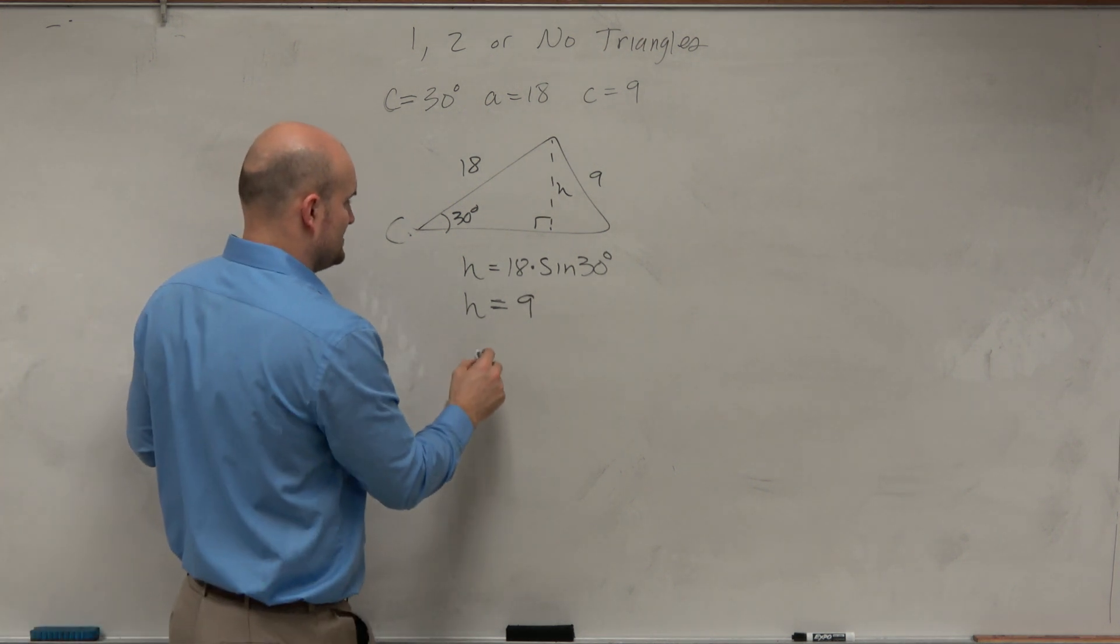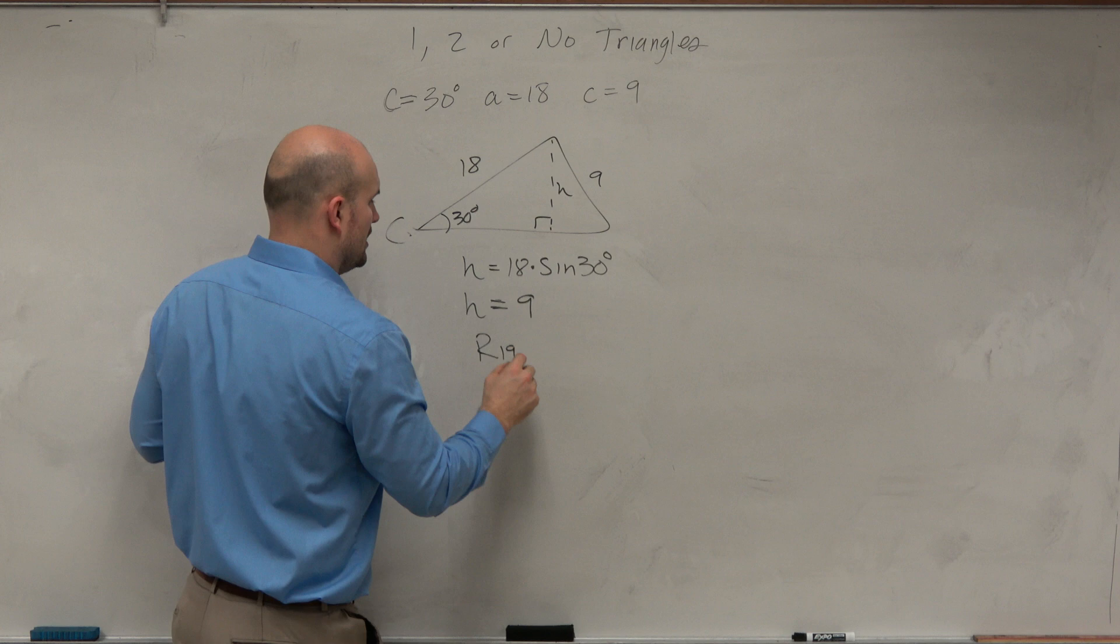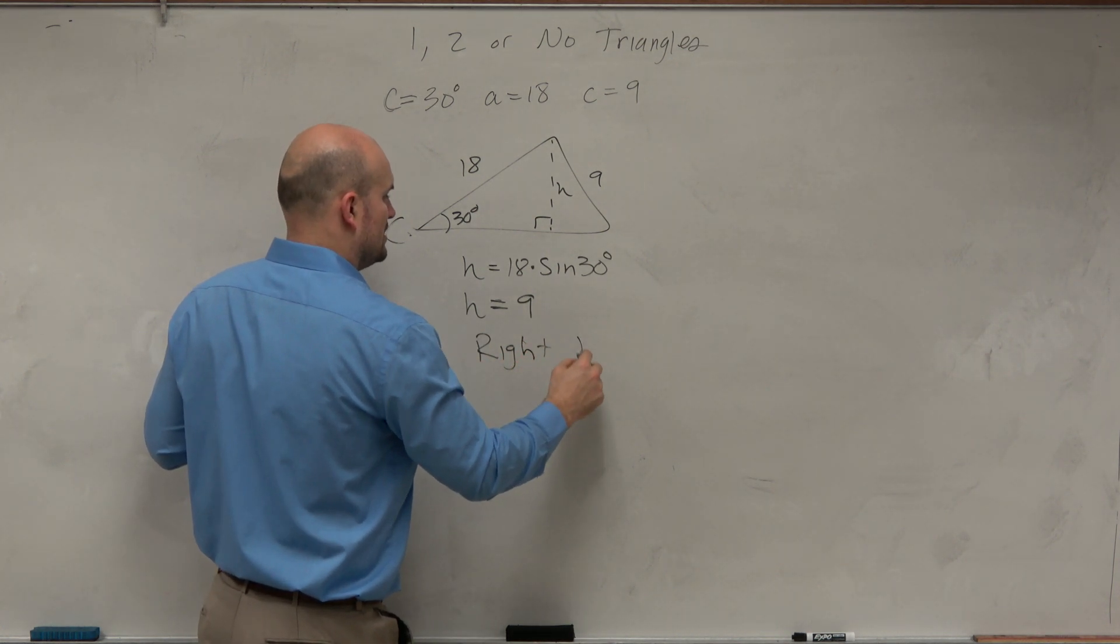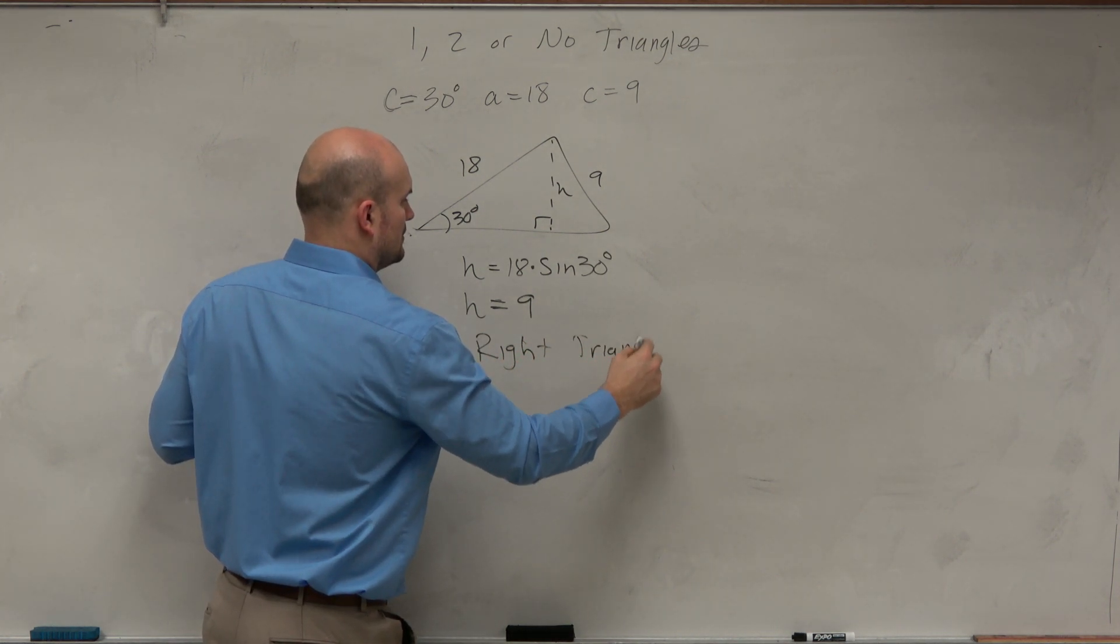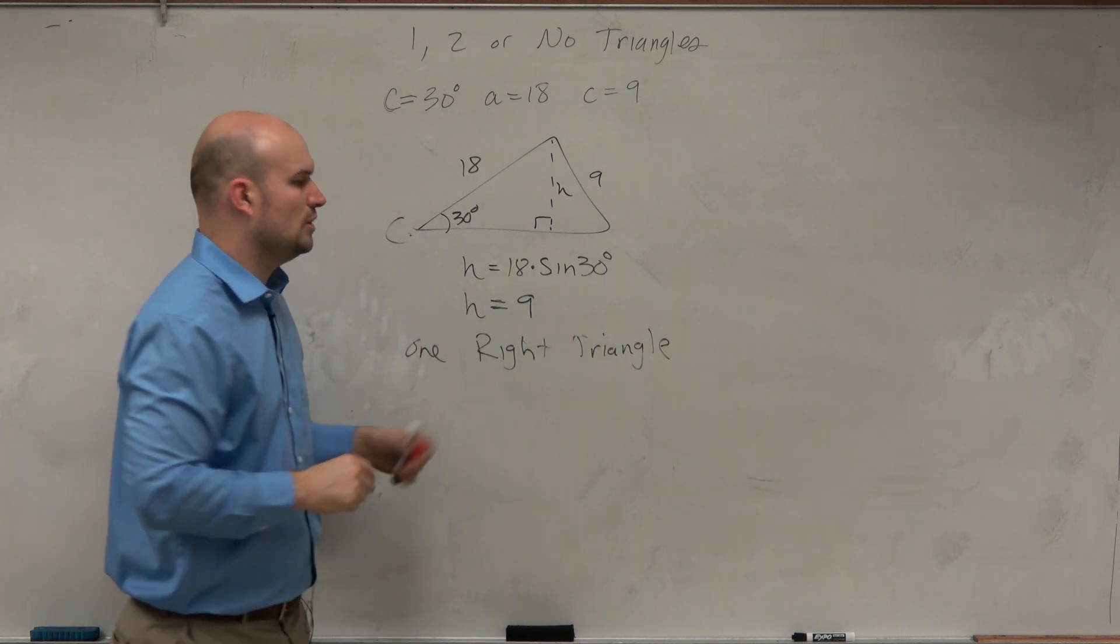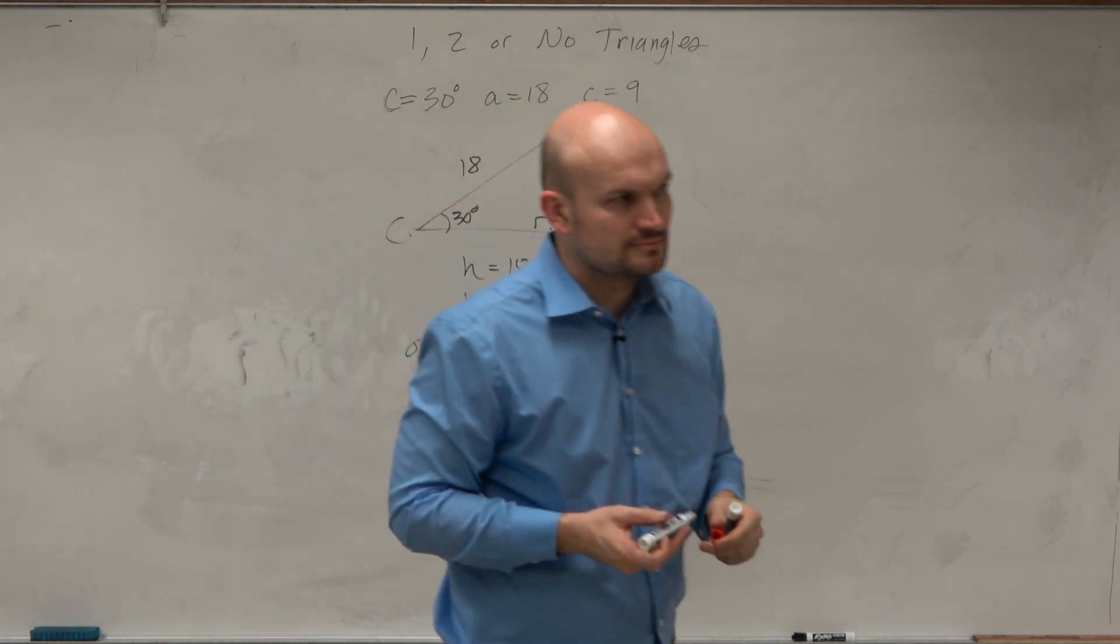So therefore, what we have is one right triangle. The question was, is there 1, 2, or no triangles?